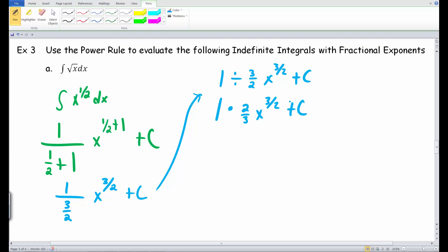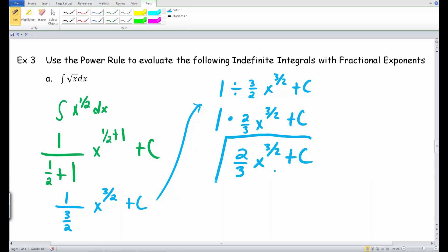And as a result, 1 times all this is still just that 2 thirds, x raised to the 3 halves, plus some constant. So this would be our final result for example 3A from our 4.1 set of notes.